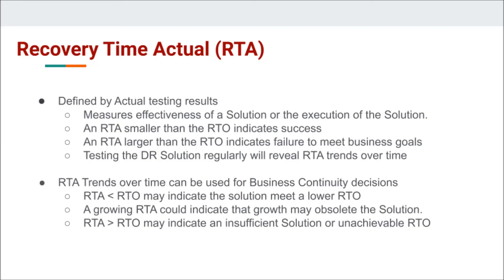The RTA trend can tell you a lot and help with many business decisions. If you're consistently under RTO, maybe you're in a position where you can offer the business a smaller RTO and less data loss. If your RTA is growing over time, maybe your recovery solution fits you for now but at some point you're going to outgrow it and may have to rework it. And if your RTA is consistently above your RTO, that means your solution may be insufficient, your staff may not be executing it well enough, or possibly that RTO target is unreasonable or unachievable with the technology you have and you need to rethink things.